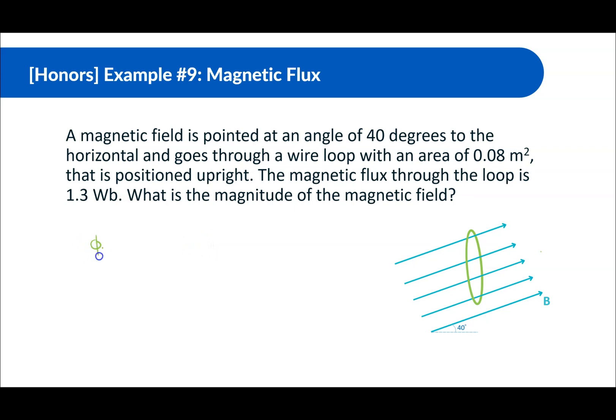Okay, so again, the formula is magnetic flux is equal to the magnetic field times the area times cosine theta. This time, we're looking for the magnetic field. So let's do this. Magnetic flux divided by A times cosine theta is equal to the magnetic field. Okay, so let's simplify this.